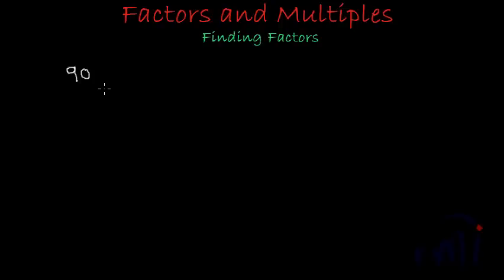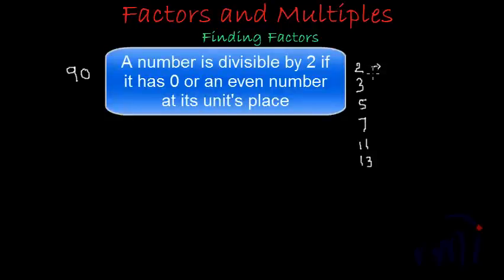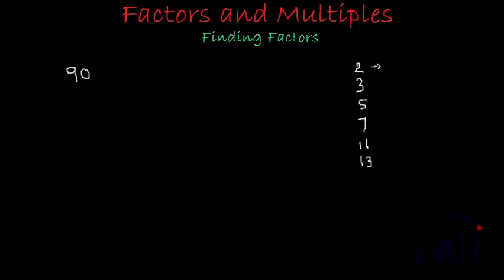First let's see its divisibility. We will check in order of 2, 3, 5, 7, 11, and 13, because all these are the prime numbers. The divisibility rule of 2 is: any number which has 0 or an even number at the units place will be divisible by 2. So 90 has 0 at the units place, so it will be divisible by 2.